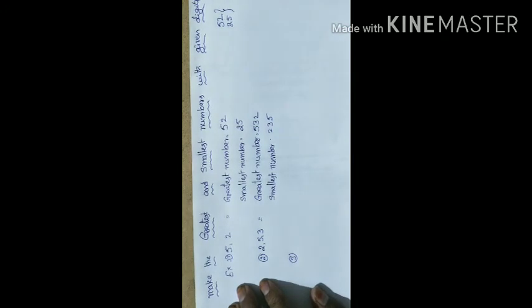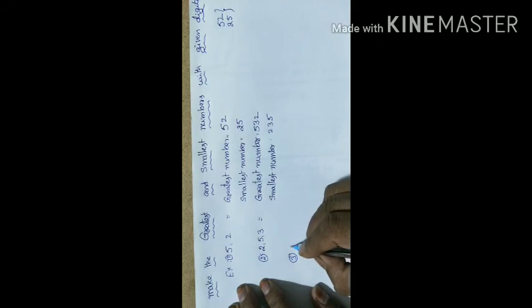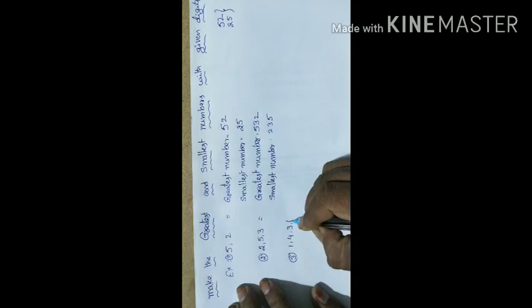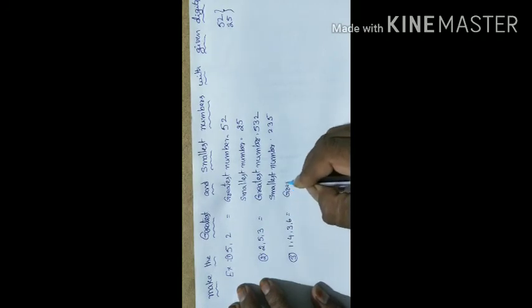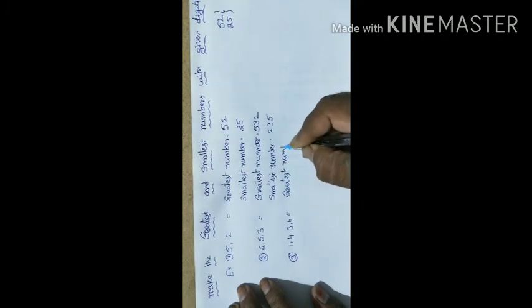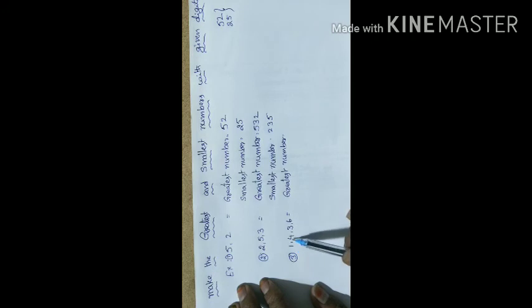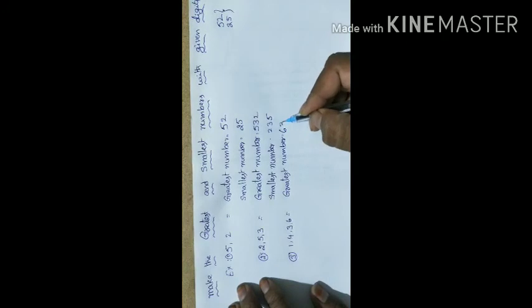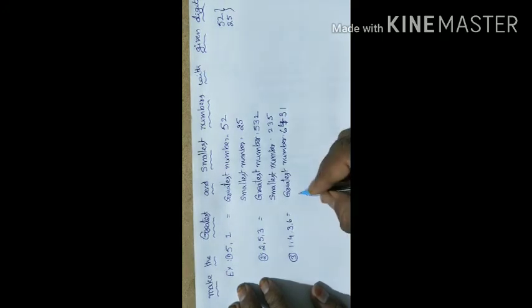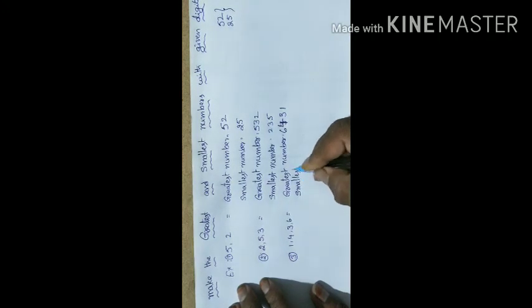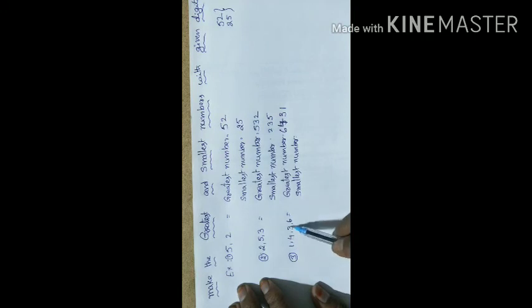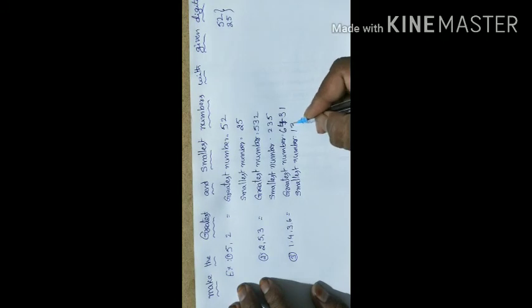Third example. Look here: digits 1, 4, 3, and 6 are given. Which is the greatest number? The greatest number should be in descending order, so: 6, 4, 3, 1 — that is 6,431. This is the greatest number. At the same way, the smallest number is in ascending order: 1, 3, 4, 6 — that is 1,346.